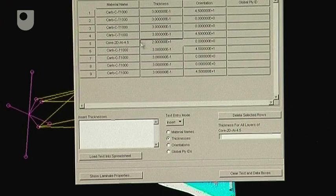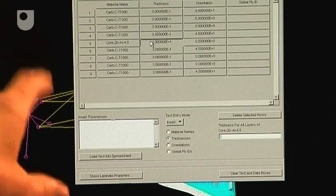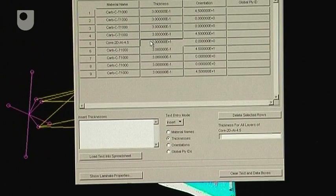And there's also a core material as well, which again is represented using a different kind of constitutive model. And the clever bit, if you like, is it goes and works out the stiffness of that and the strength of each of those plies individually when you actually apply loads to them.